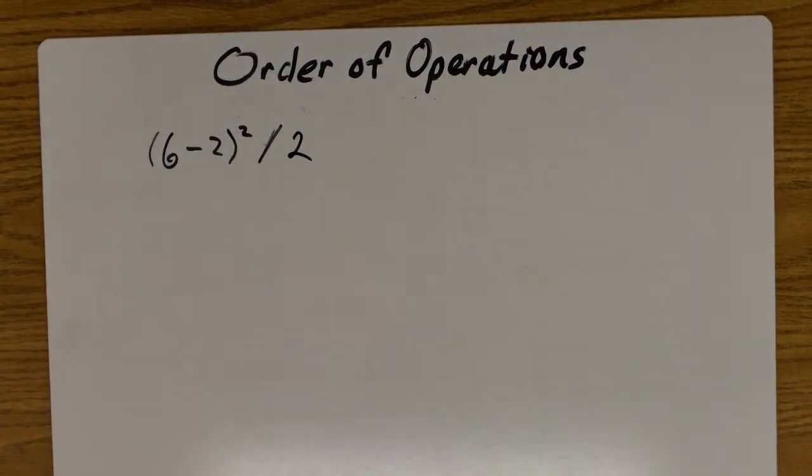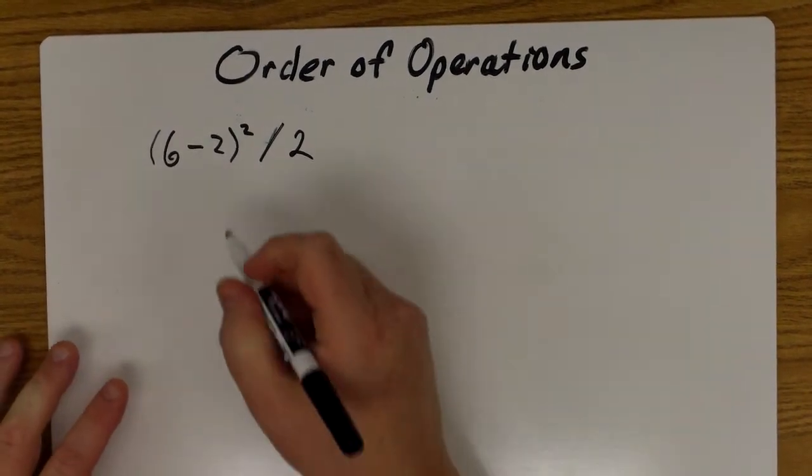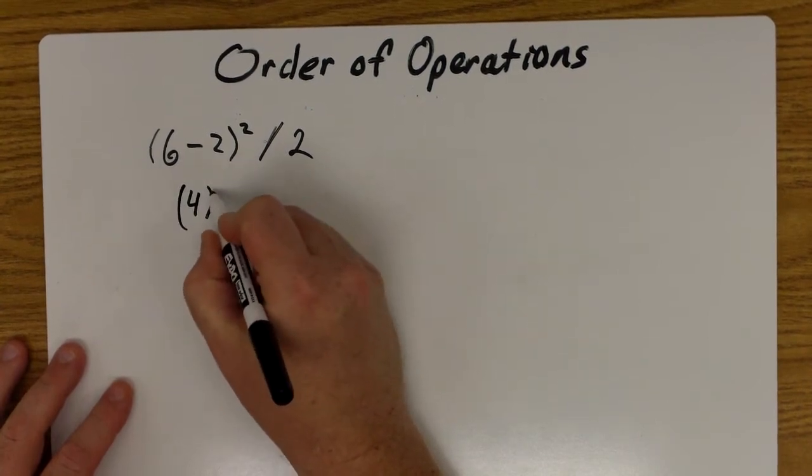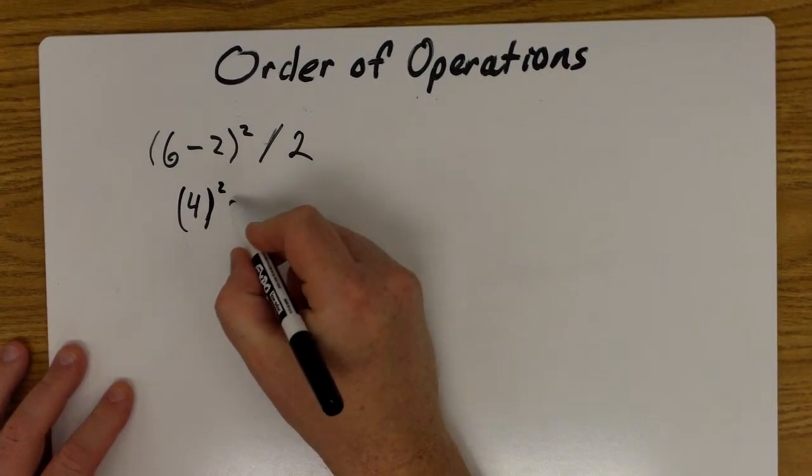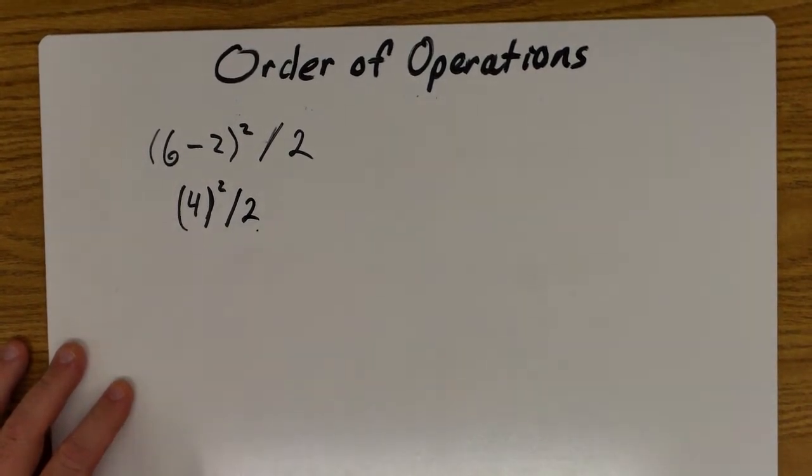Our order of operations says to do things inside the parentheses first, so six minus two, and that will leave us with four. Bring down anything you haven't calculated yet, so I'm bringing down the exponent, I'm bringing down the divide by two.